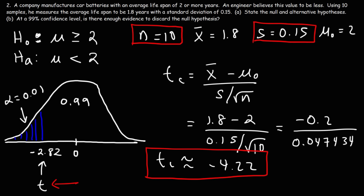Comparing our calculated t-value of negative 4.22 to the critical t-value of negative 2.82: our calculated t-value is in the shaded area, in the rejection region. So we should reject the null hypothesis. Therefore, with a 99% level of confidence, we cannot accept the null hypothesis that the average lifespan of the car batteries is two or more years. There is enough evidence to discard the null hypothesis.